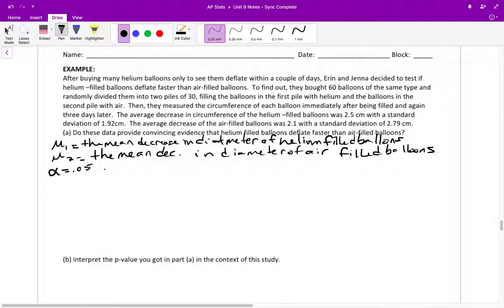Let's also state our hypotheses here. Let's let our null hypothesis be that there is no difference. In other words, that mu1 is equal to mu2. And let's let our alternative be that we think the diameter decrease for the helium balloons is a bigger decrease than the ones with air. In other words, that mu1 is greater than mu2.